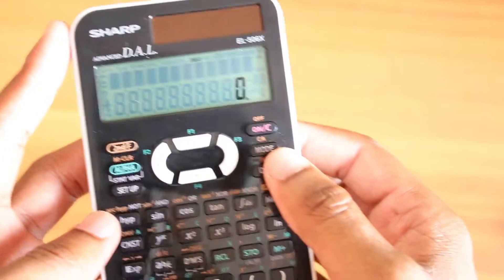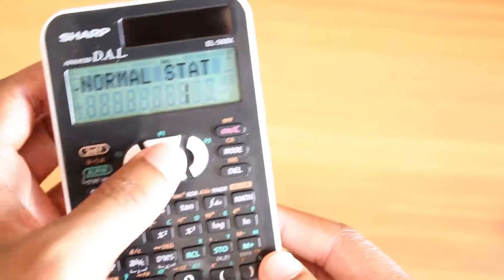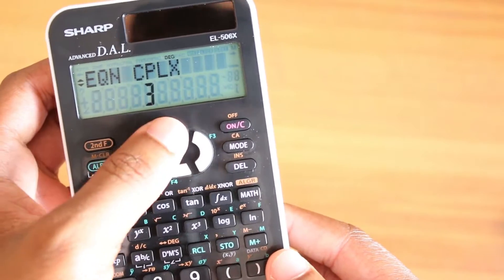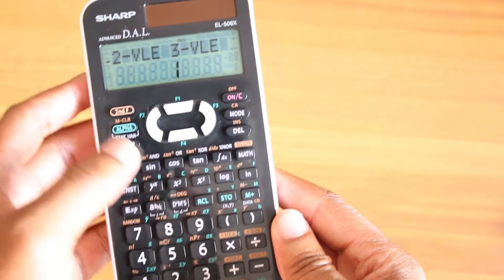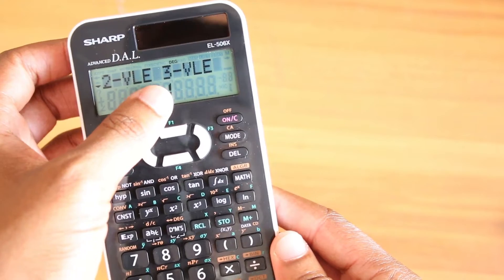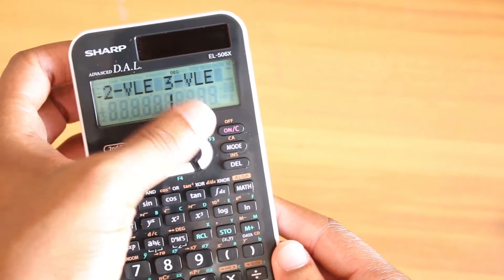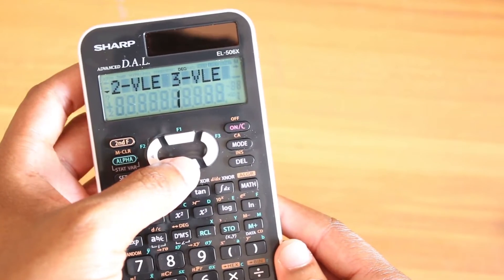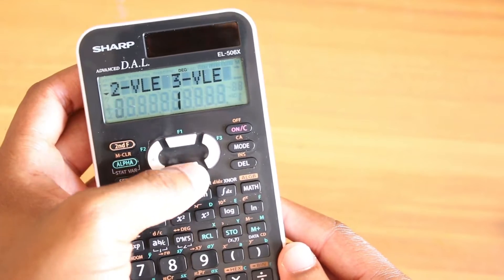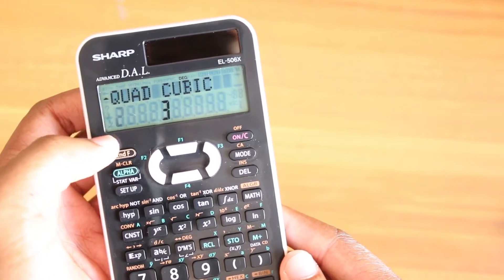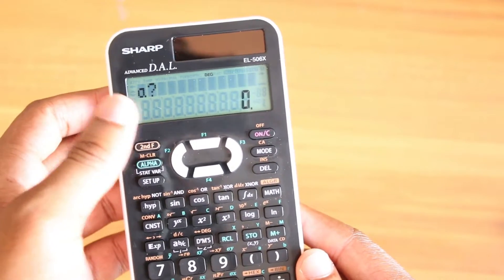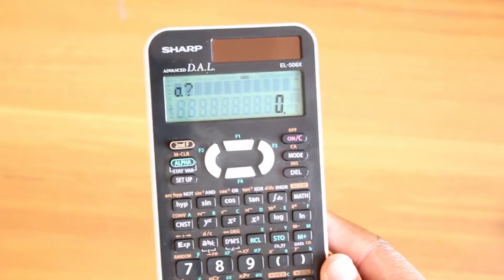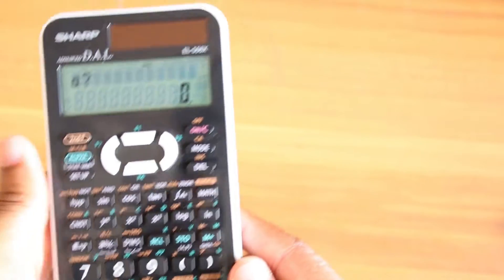You press mode, scroll through, and choose equation by pressing 2. Two-variable linear equation, three-variable linear equations - these are for simultaneous equations, I'll show you that later. Press down twice and go into quadratic equations by pressing 2. This asks for the a, b, and c in the quadratic equation - check the general form.